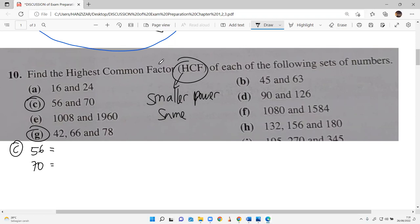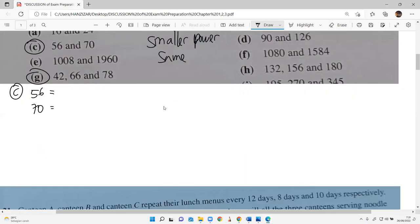And it has to be same. So 56, we have to do further working. Write down 56: I get 7 times 8. 8 is 2 times 4, and then 2 times 2. So 2 cubed times 7.